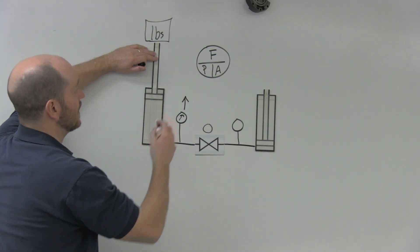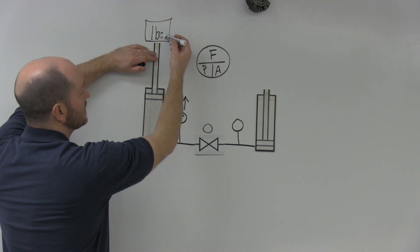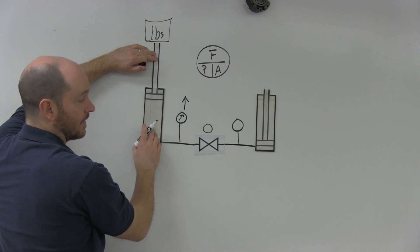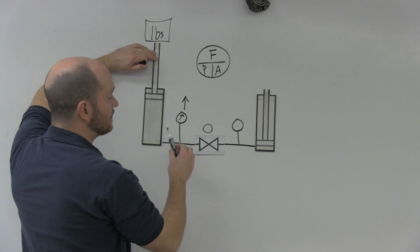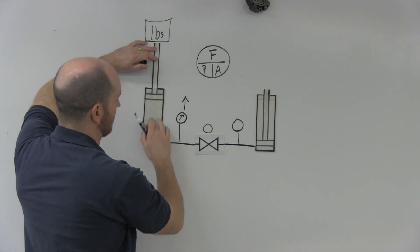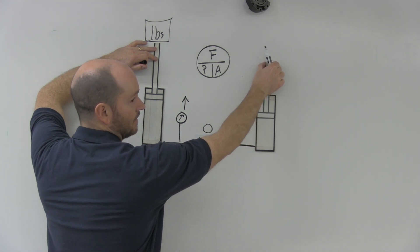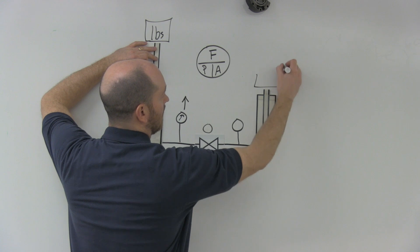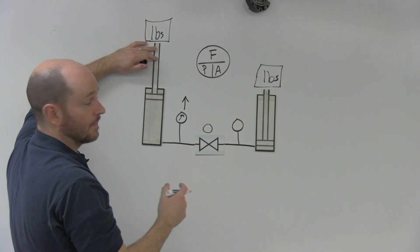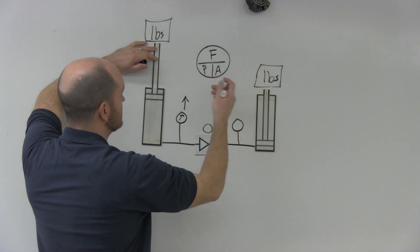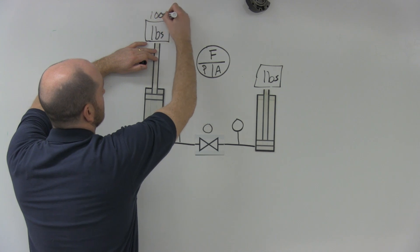Now if I open this valve, a couple of things happen. The pressure is no longer based off how much force is on this cylinder's area. The pressure is going to be based off of how much pressure it takes to allow oil to flow from this cylinder into the other one and lift it up. So let's draw some amount of force required to lift this.